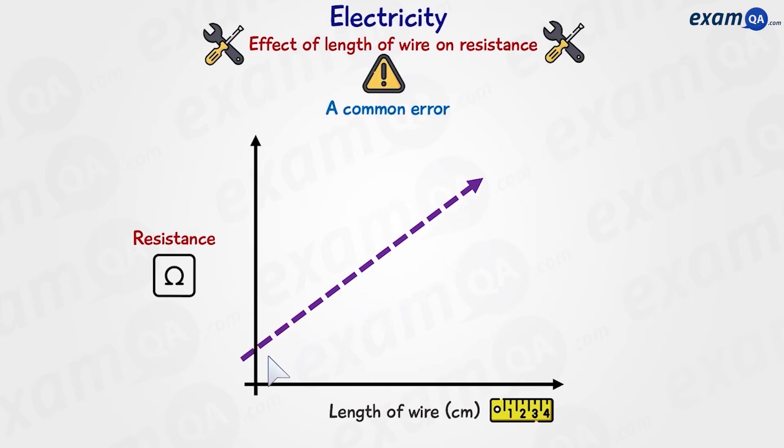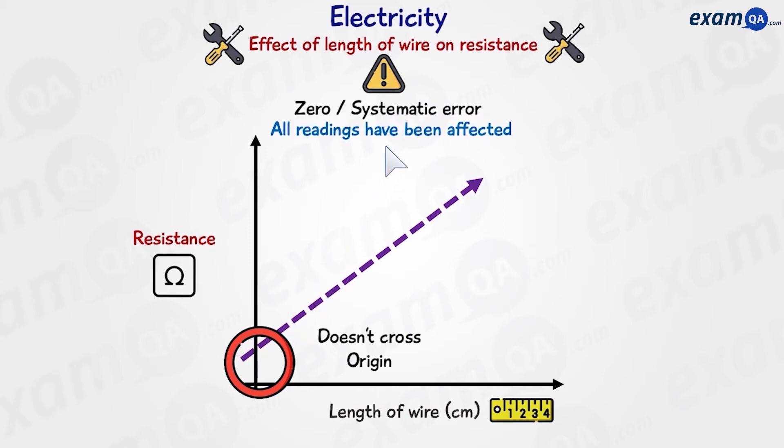Now, sometimes you might see that your data does not cross the origin, and this is a common error. In this error, all the readings have been affected, which is also known as a zero or a systematic error. So why did this happen? This happened most likely because the clips in the beginning were not exactly zero centimeters apart.